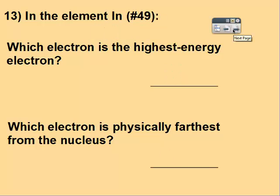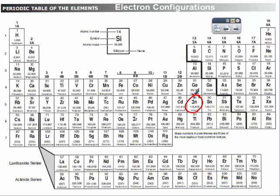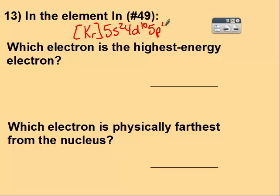I'm going to pause the video and try this one on your own. So here's indium, we have krypton, 5s2, 4d10, 5p1. So the highest energy is the 5p, and farthest from the nucleus is 5 energy level. Because the 5p and 5s are equally far.